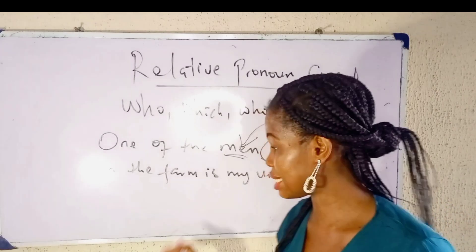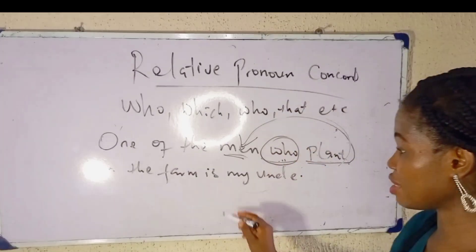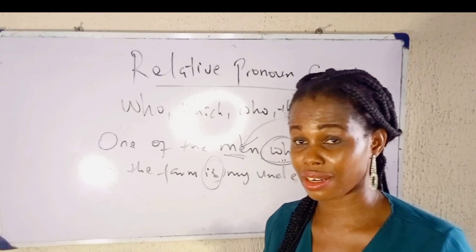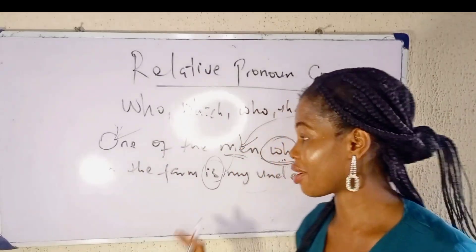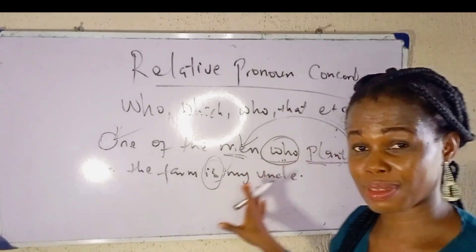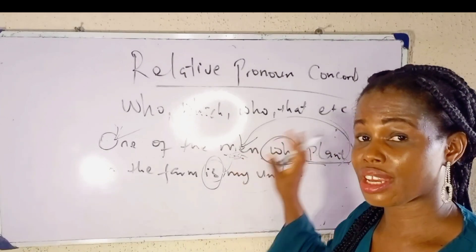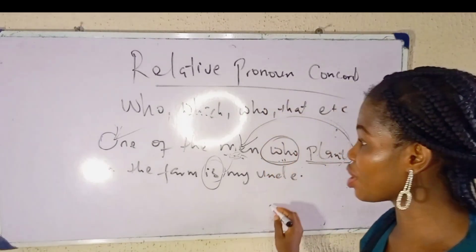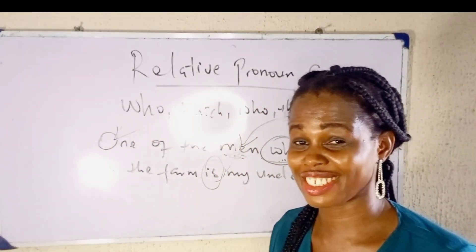And the second verb in the sentence is going to agree with the subject of the sentence. The second verb in this sentence is 'is.' 'Is' is singular — the plural of 'is' is 'are.' 'Is' agrees with 'one,' because 'one' is the subject of the sentence. The first verb after the Relative Pronoun agrees with its antecedent, and the second verb agrees with the subject. I hope you understood.